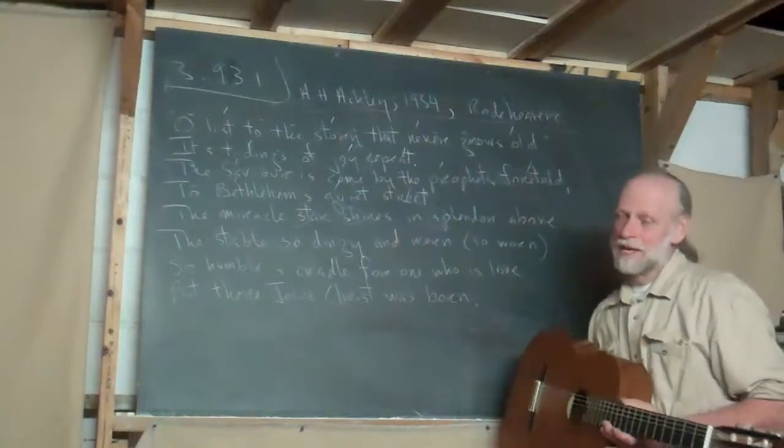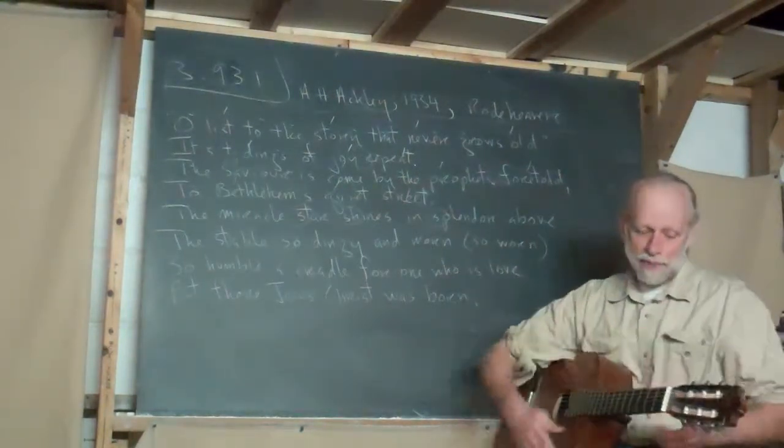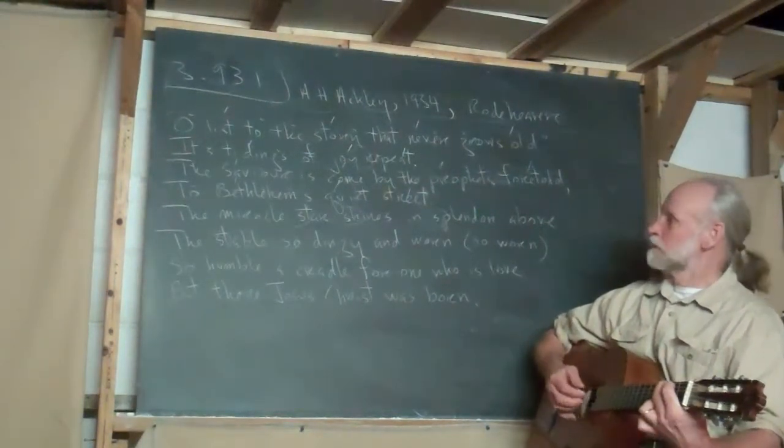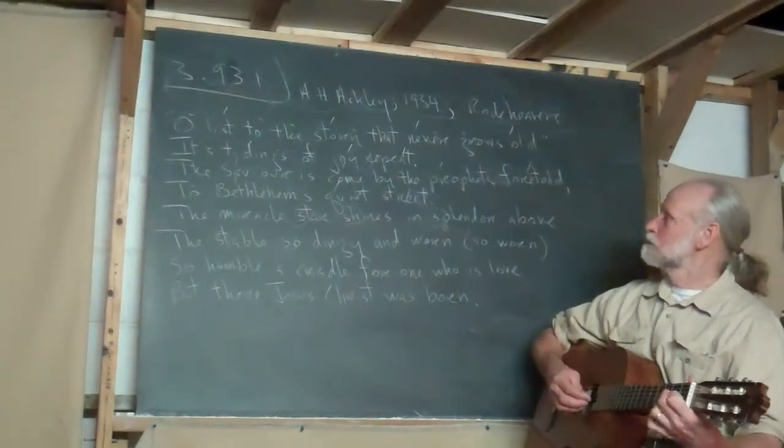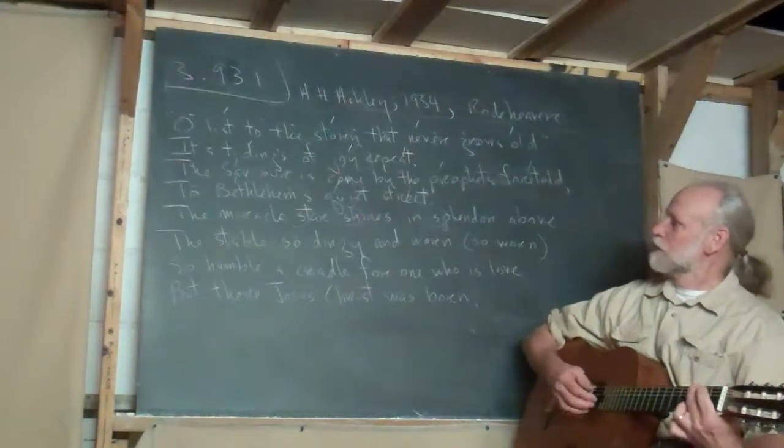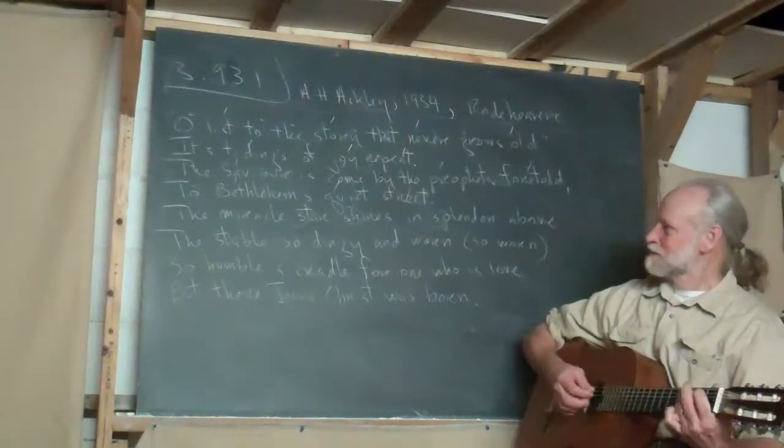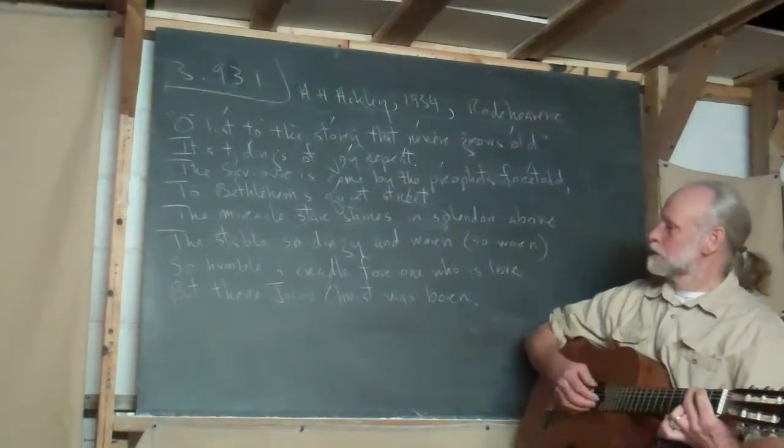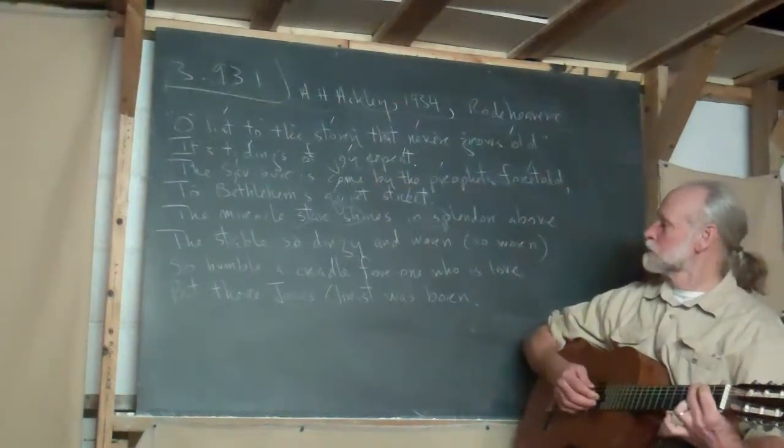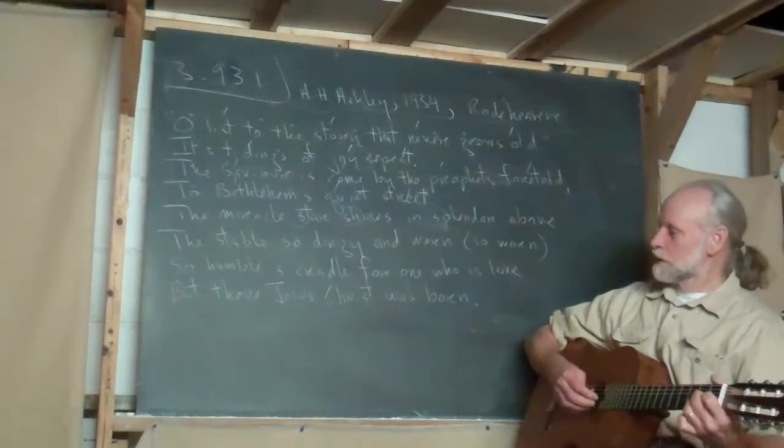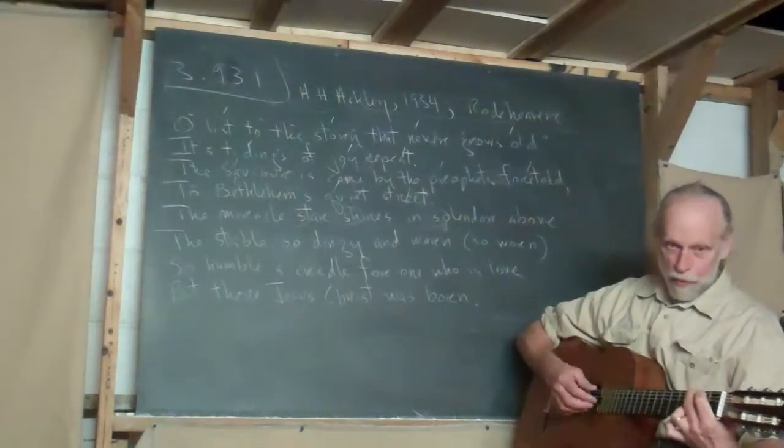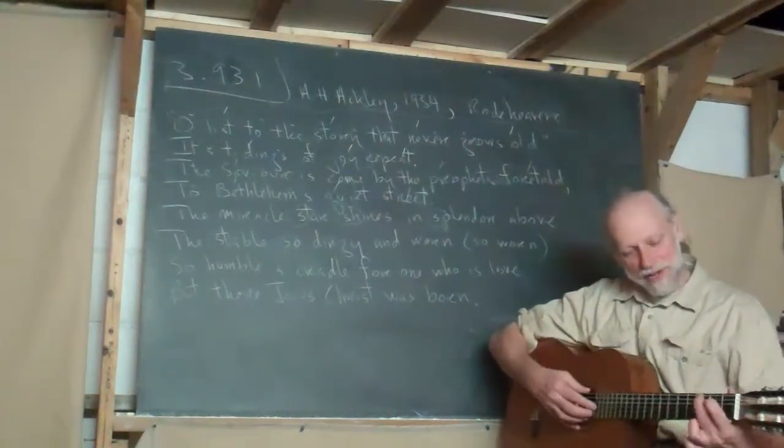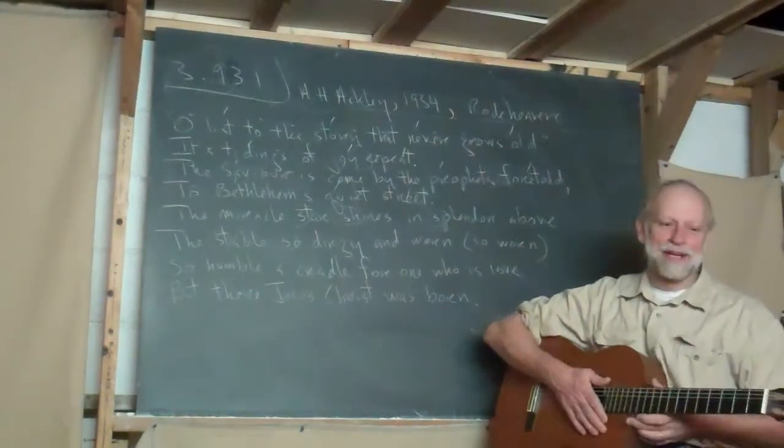Let me show you how this goes. It's just a three chord song. It's also so simple. I'll probably get it all wrong, but... Oh, list to the story that never grows old. Its tidings of joy repeat. The Savior has come by the prophets foretold. To Bethlehem's quiet street. The miracle star shines in splendor above the stable. So dingy and worn. So worn. So humble a cradle for one who is love. There Jesus Christ was born. I can get to three by going with my thumb, ching, ching. That's one of the reasons I decided to go ahead with the guitar.